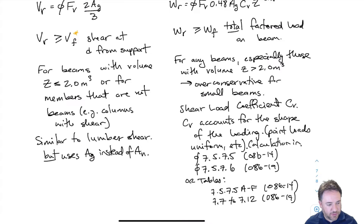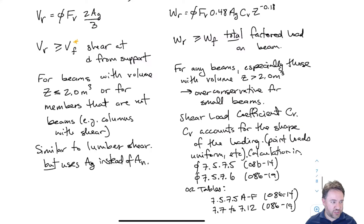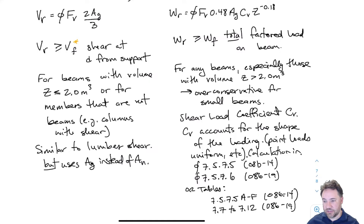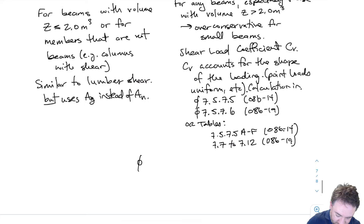CV accounts for the shape of the loading. Depending on whether it's a point load or uniform load, or a series of point loads, I get a different CV shear load coefficient, which changes my total factored load resistance WR for shear strength. I can get CV either through a calculation method or through tables, which I'll show in a few moments.